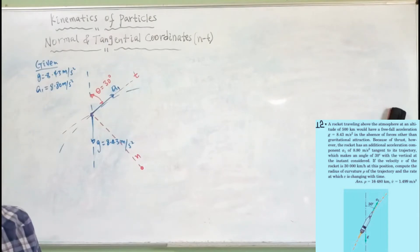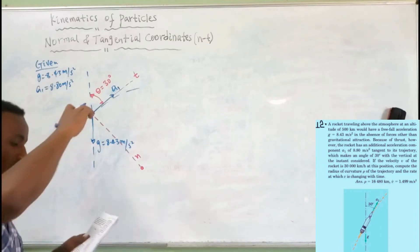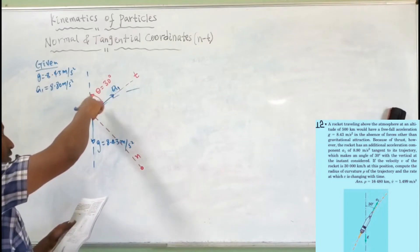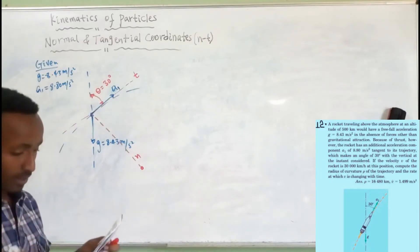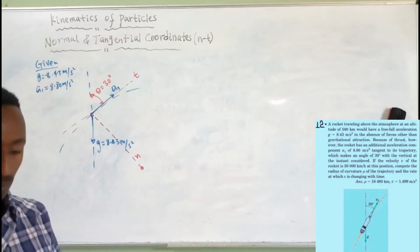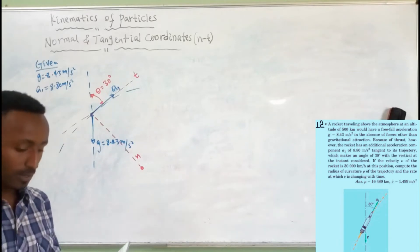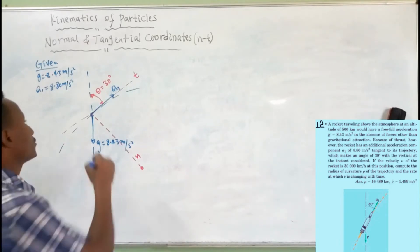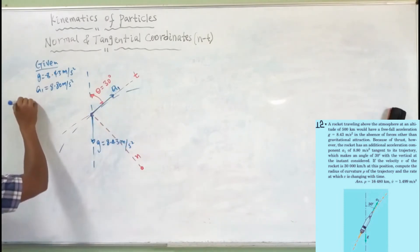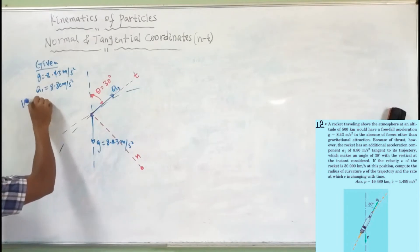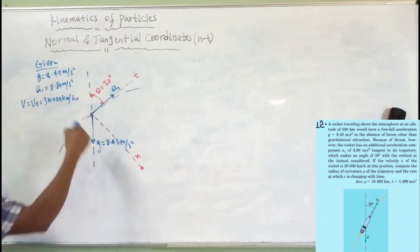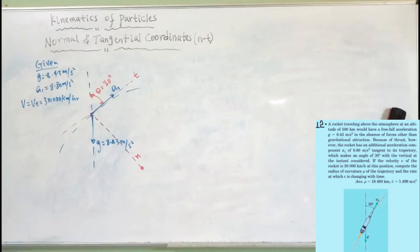A1 makes an angle of 30 degrees with the vertical at the instant considered. The velocity V of the rocket is 30,000 km per hour at this position. So V tangential is 30,000 km per hour.